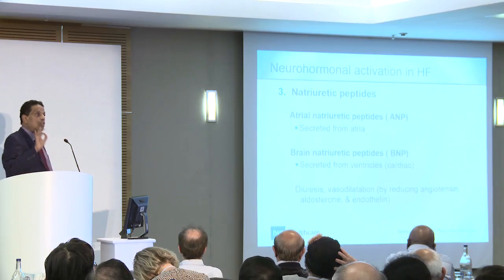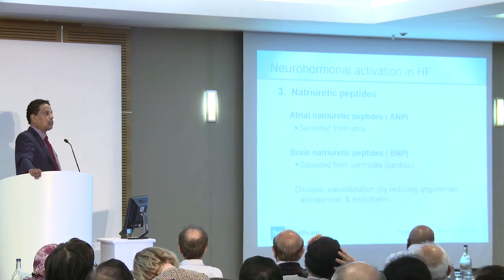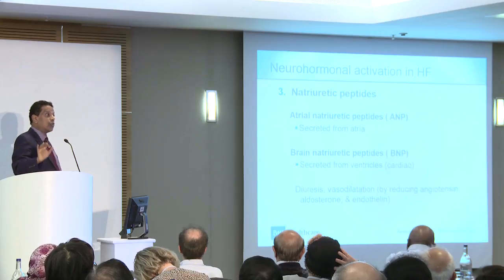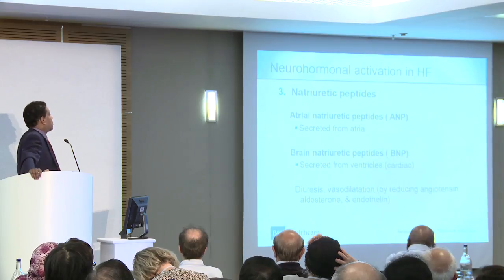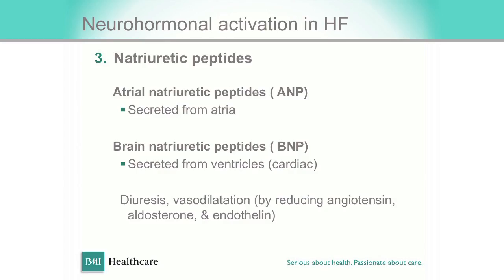There is only one neurohormonal activation which is good, and that is natriuretic peptide. The atrial secretes atrial natriuretic peptide, and the ventricle secretes brain natriuretic peptides. They are vasodilators as well as causing a certain amount of diuresis, but one against two is not a match.